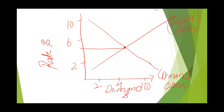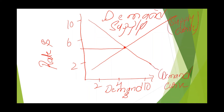Now the question is: will the exchange rate always be in equilibrium or stable? No — it will change whenever there is a change in demand or a change in supply. First we will look at demand. If there is any change in demand, whether it is an increase or a decrease, the exchange rate will fluctuate.